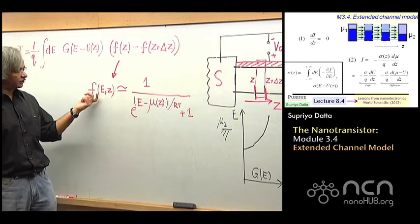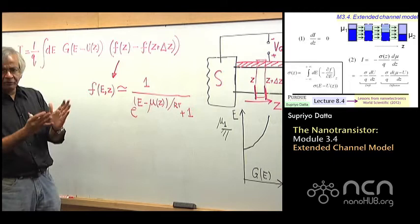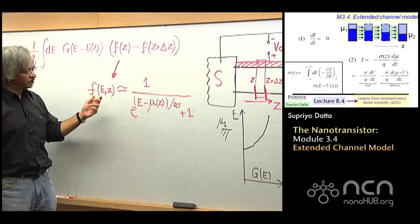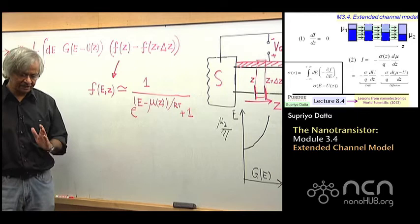If I was in contact 1, the distribution of electrons in energy would look like this with mu 1. If I was in contact 2, it would look like mu 2 — that's the drain. And if you are somewhere in between, the assumption is the distribution of electrons in energy can be described by some effective electrochemical potential mu. People call these quasi-Fermi levels.